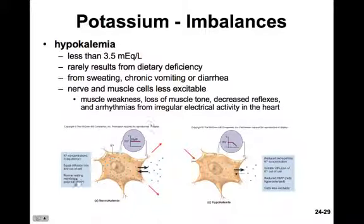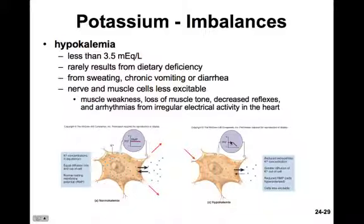In the normal condition, potassium is moving into and out of the cell at fairly equal rates — the sodium-potassium pump moves potassium out and it diffuses back in. In hypokalemia, there's greater movement of potassium out of the cell and less movement in. This greater diffusion out results in positive charges leaving, creating more negativity in the membrane potential, making it much harder to elicit an action potential — hence the weakness.